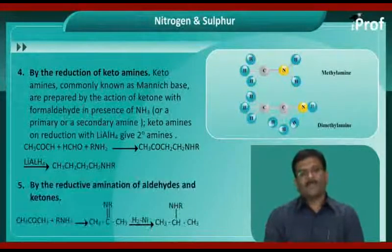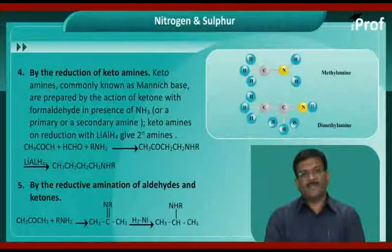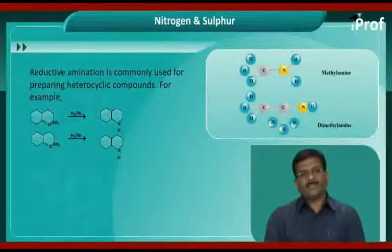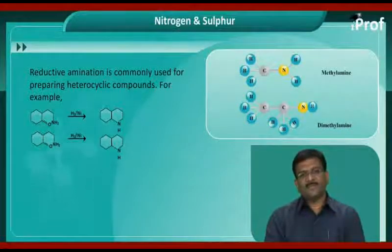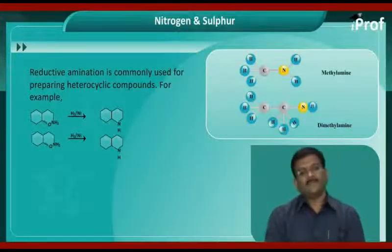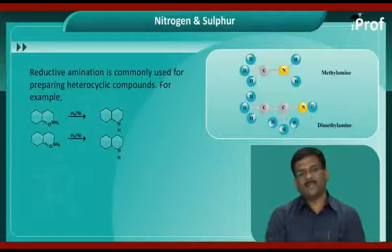The next method is by the reductive amination of aldehydes and ketones. Amination is commonly used for preparing heterocyclic compounds. Next are the methods which give only tertiary amines.